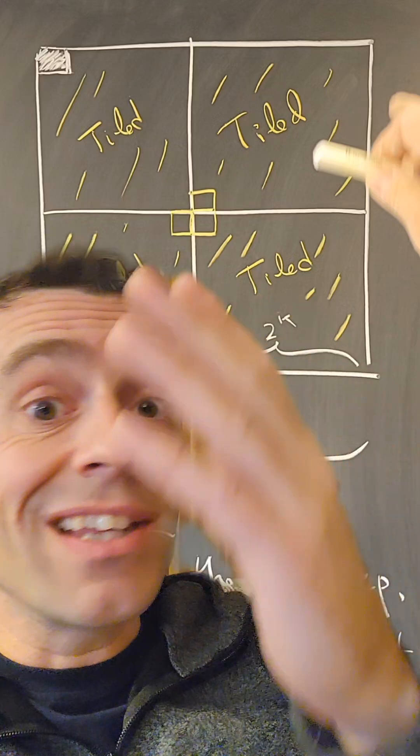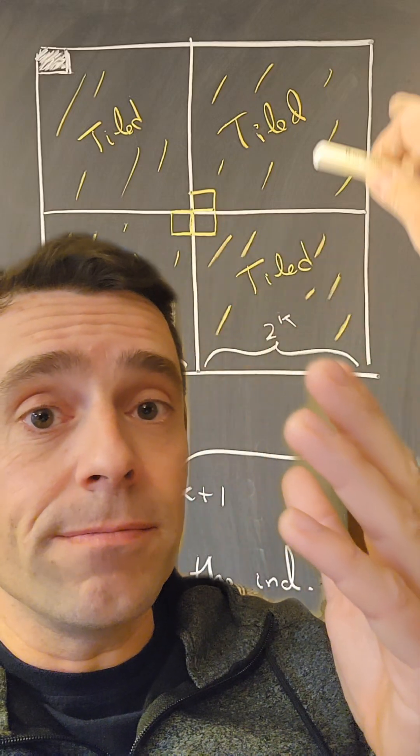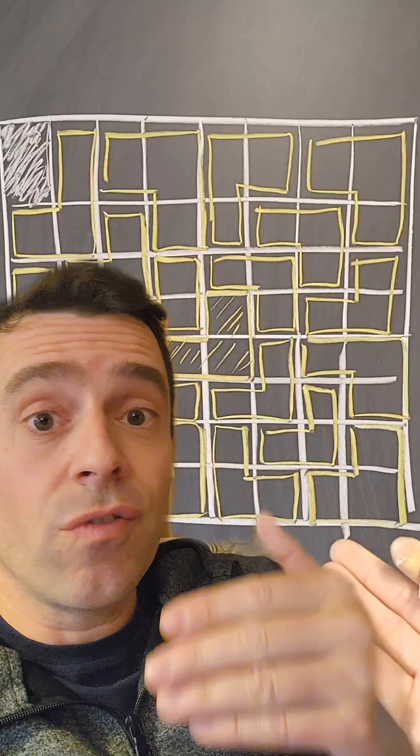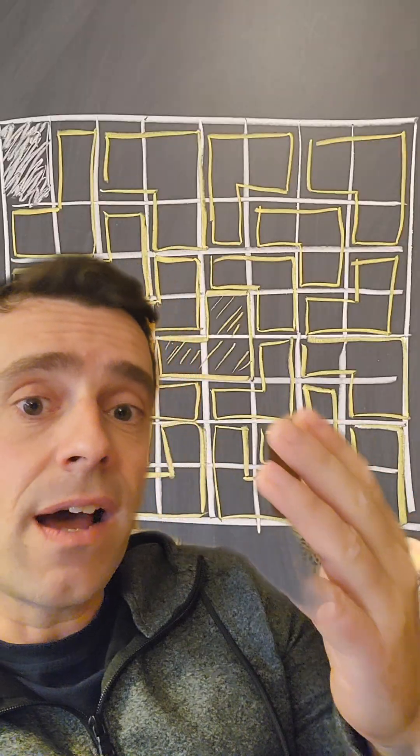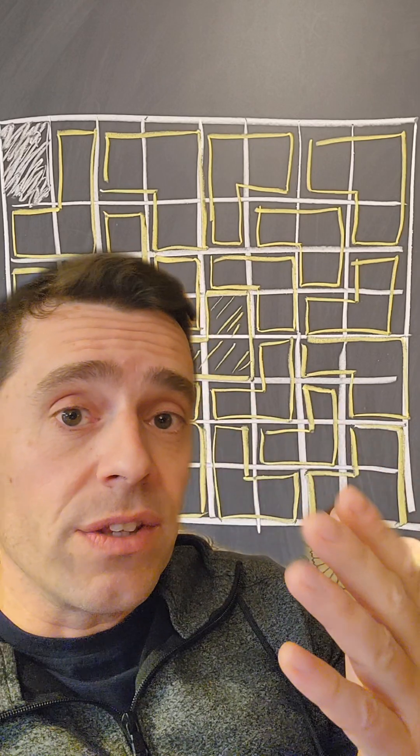Therefore, the proof itself doesn't construct the tiling. If you consider that that sort of algorithmic way of finding the tiling is a construction of the tiling, then any proof would be constructive.